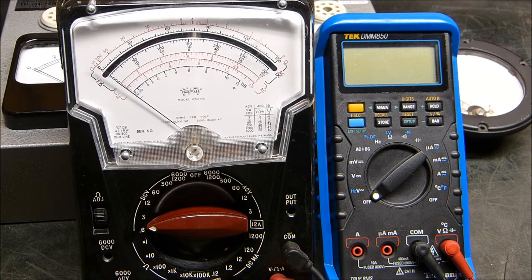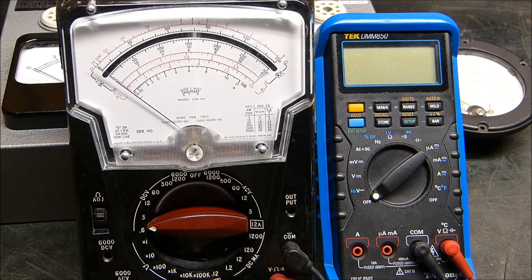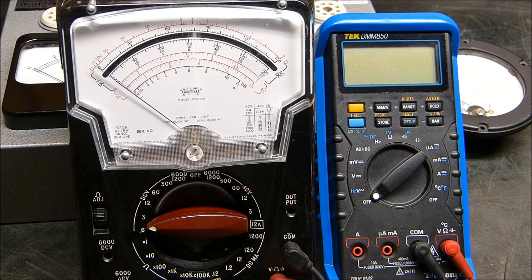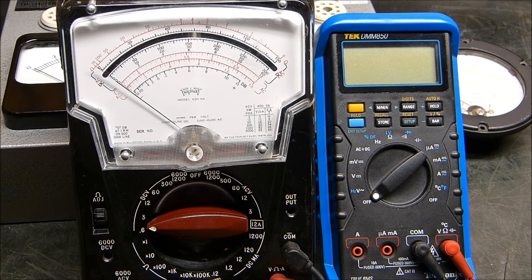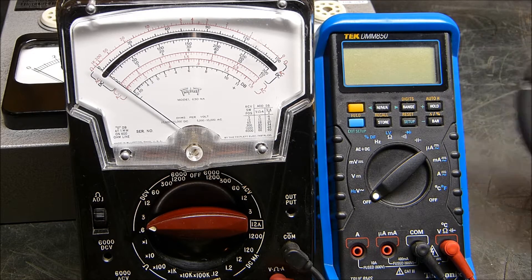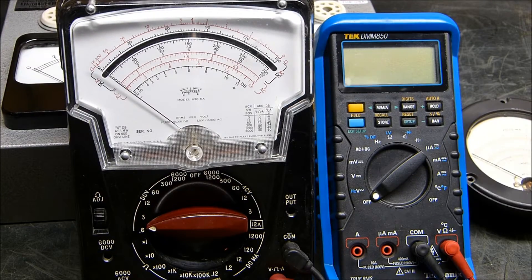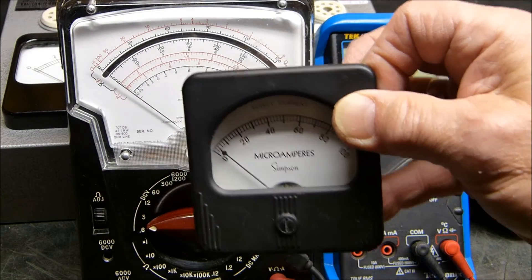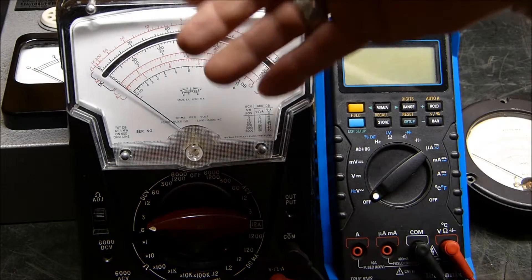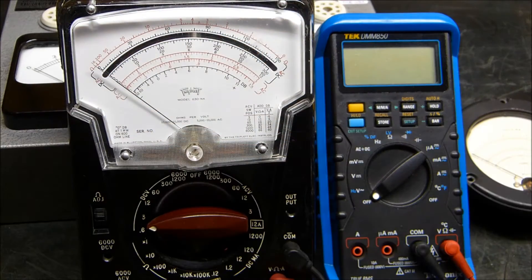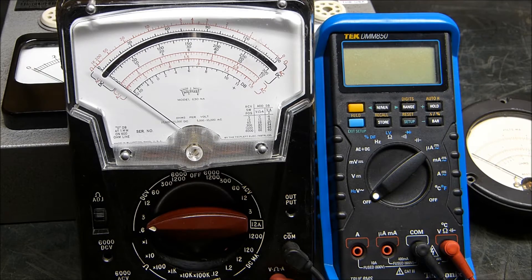It is January 15th, 2015, and I want to show you how to determine the internal resistance of meter movements like this. There's one that's a 1 milliamp - we don't know how many ohms per volt it is. Here's a 100 microamp.